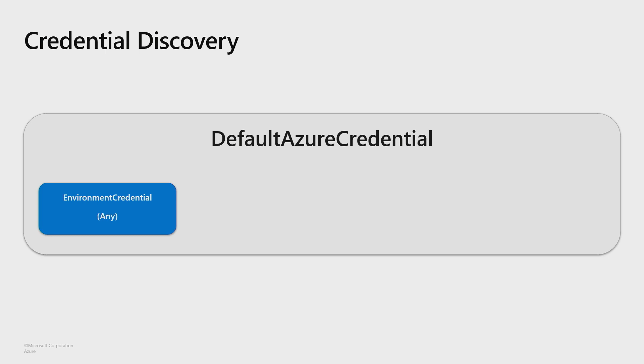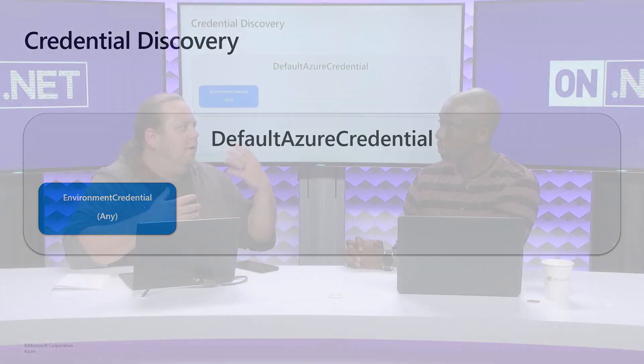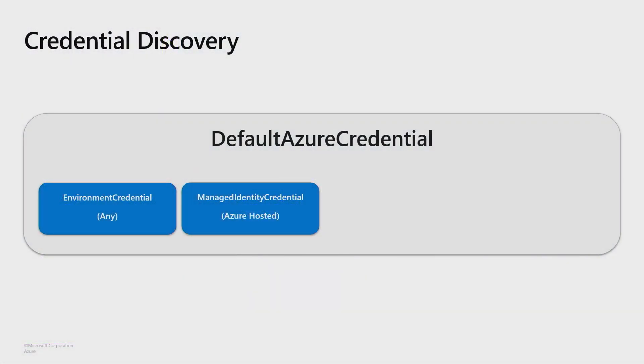The first thing we probe is the environment — specifically for environment variables set with credential information. This works in any environment, whether on your dev machine or a deployed Azure resource. The next thing we look for is a managed identity. If I'm in a hosted Azure environment, we have MSI or managed service identity — a resource which has been assigned an identity that can be granted access to things like Blob Storage or Key Vault. It's like creating a service account, an identity not associated with a person but assigned to your worker services.